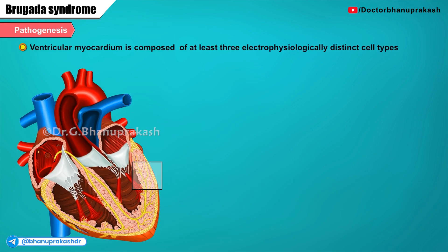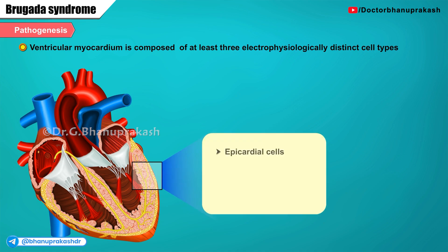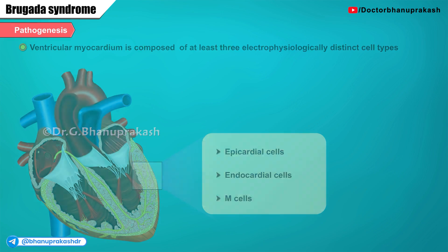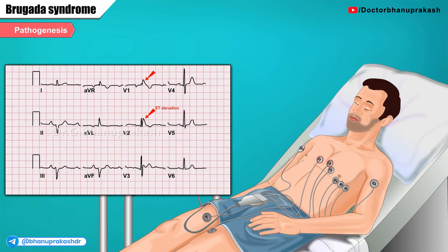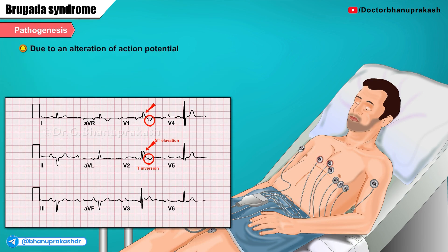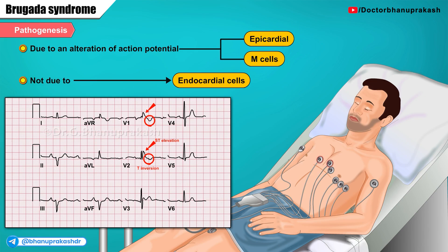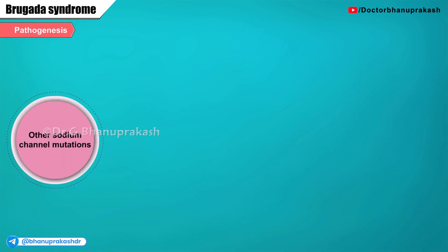The ventricular myocardium is composed of at least three electrophysiologically distinct cell types: the epicardial cells, the endocardial cells, and the M cells. The ST segment elevation and T wave inversions seen in the right precordial leads in Brugada pattern ECGs are thought to be due to an alteration in the action potential in the epicardial and possibly the M cells, but not the endocardial cells.